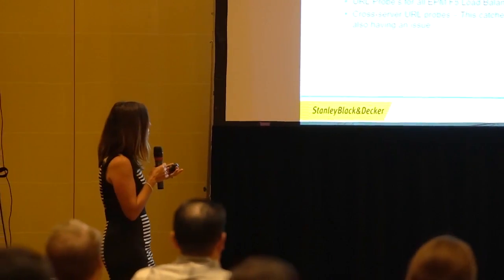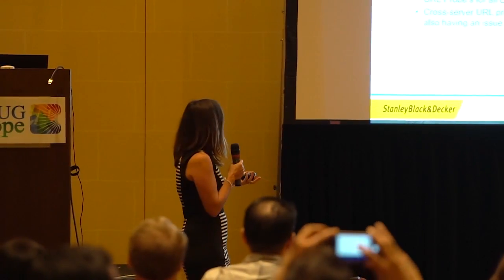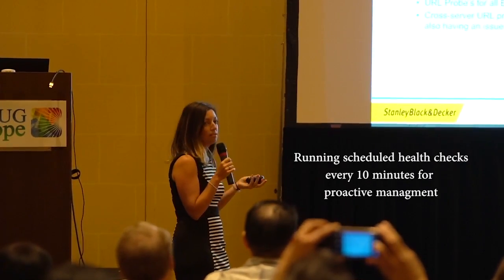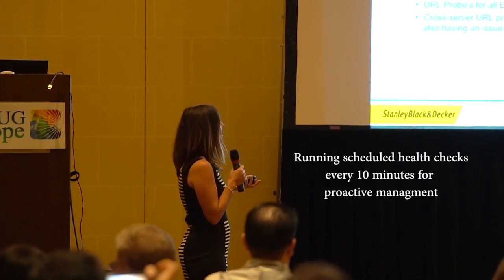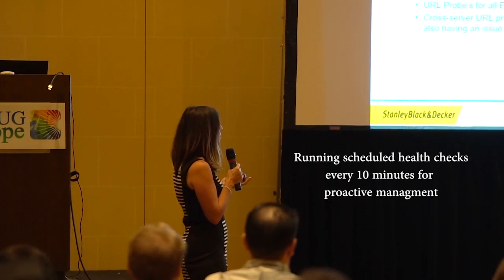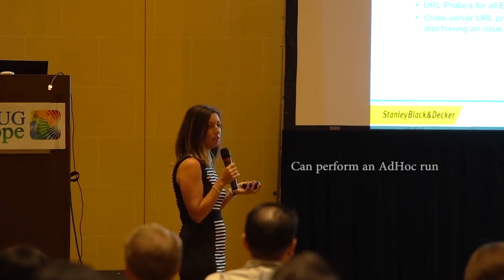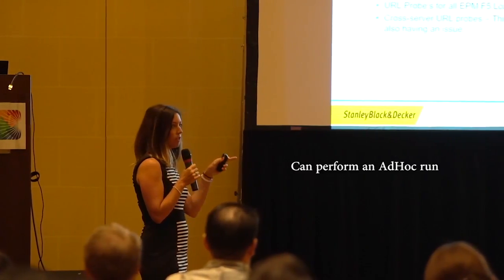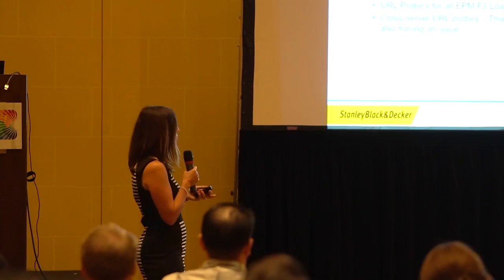Going deeper into each of the different services that we use of Accelitus, this one focuses on the health checks feature. We're scheduling and running them every 10 minutes, which seems like a lot, but we need that — just to make sure everything's up and running, everything's going smoothly. We can also at any time do an ad hoc run. If we hear of a potential issue, we can just click generate and it will go through all the different features.